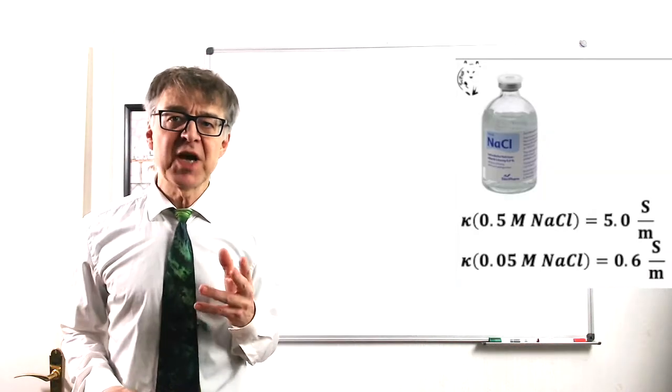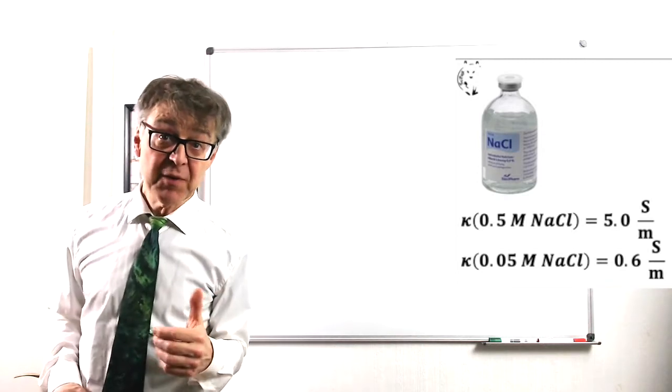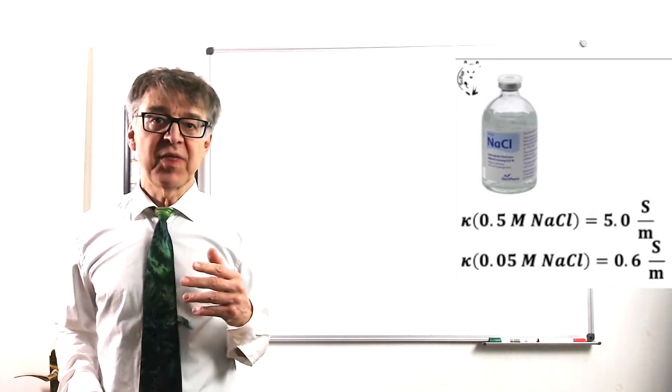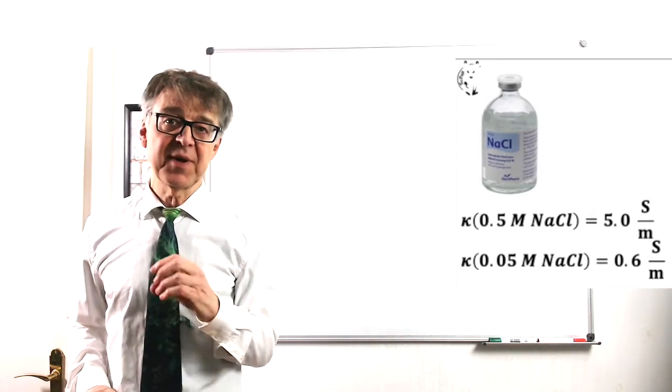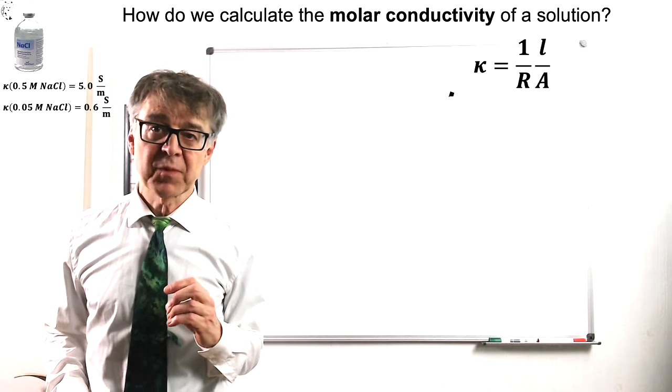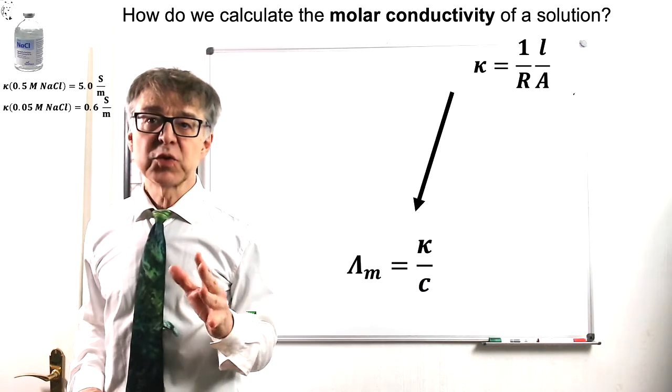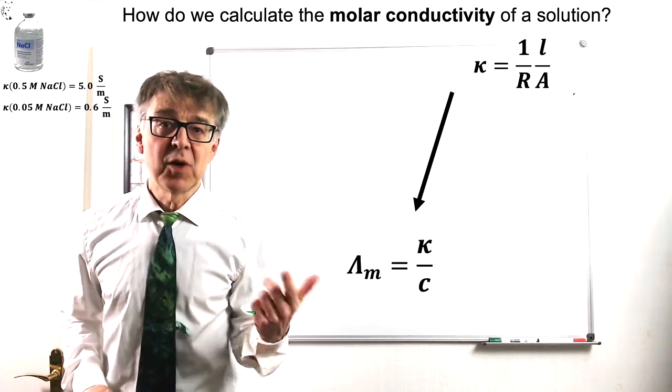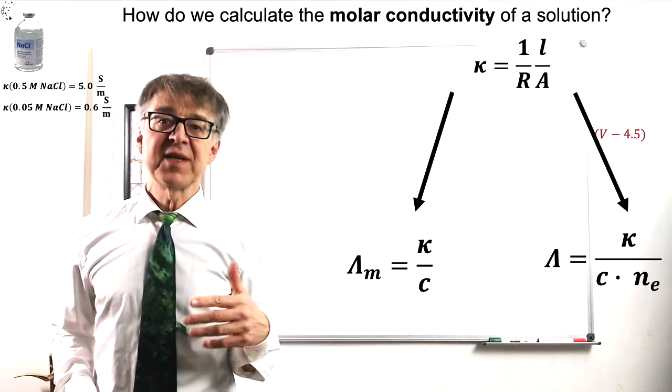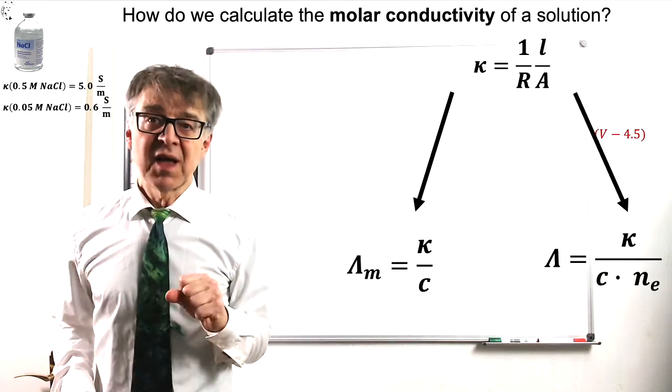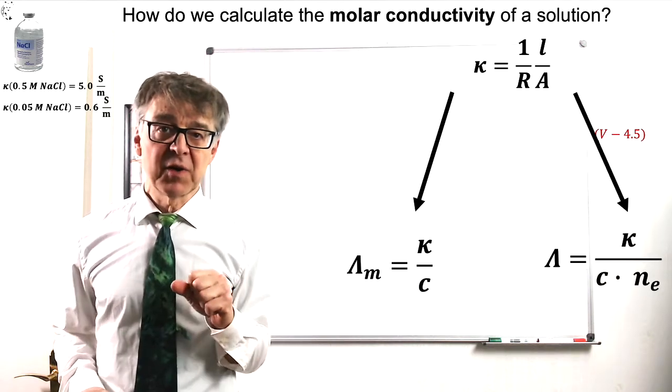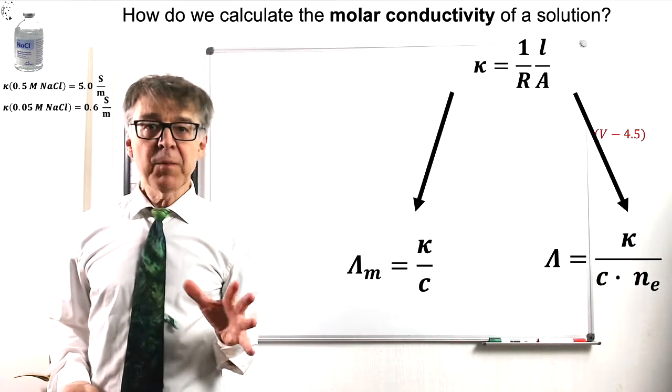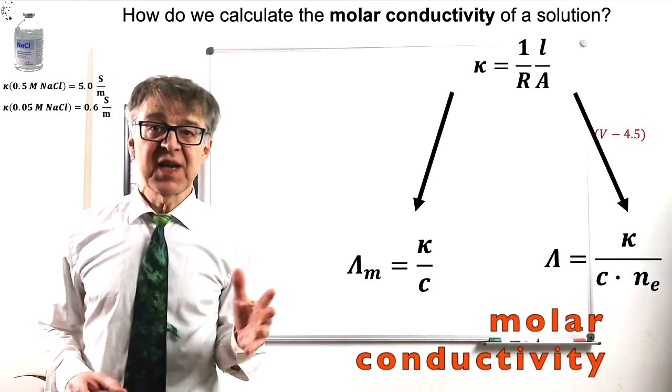The conductivity of a medium is a measure of how many charge carriers are present and how mobile they are. With electrolytes, conductivity of course strongly depends on concentration. We may scale it to 1 mole of electrolyte or charge by dividing kappa by molar concentration C or by C times N sub E. N sub E, the electrochemical value, accounts for the number of charges in 1 mole of electrolyte. We end up with molar or equivalent conductivity lambda.